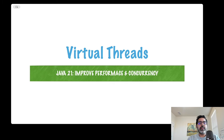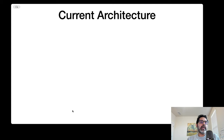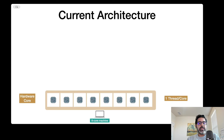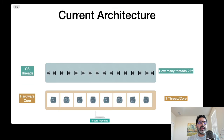We're going to see the journey and learn what the challenges are with the current threading architecture, and how virtual threads improve the life of developers. If you look at the current architecture - comparing with my machine, a MacBook Air with 16 GB of RAM and eight cores - one core represents one thread, and each of these threads is managed by operating system threads.